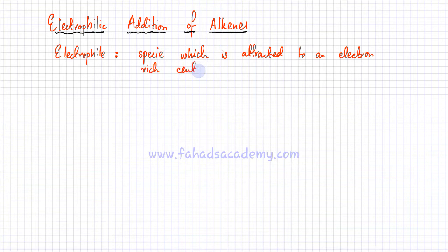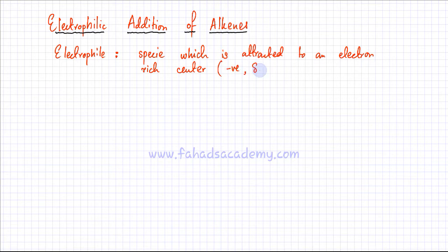An electrophile is going to be attracted to anything that has negative charge on it — whether it's a partial negative charge, excess electrons, or a double bond. This electron rich center could be a negative charge, a slight negative charge, or a double bond, because double bonds have a lot of electrons. So this species would be attracted to double bonds or triple bonds as well.